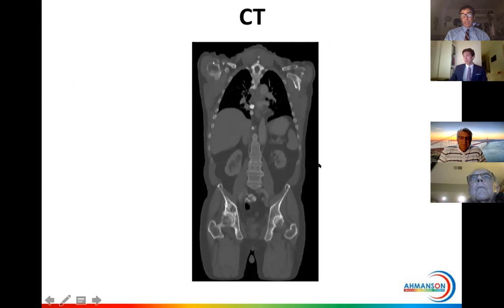This is what a CAT scan looks like — this is the body looking at the body from the front. You can see some of the spine here, the pelvis down here, liver, kidneys, and so on.